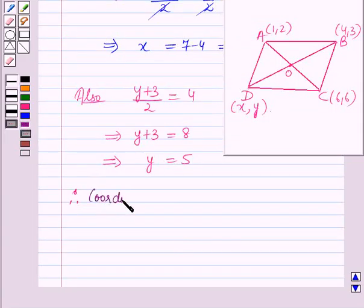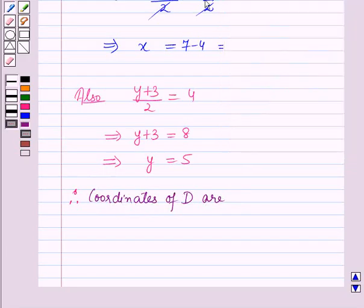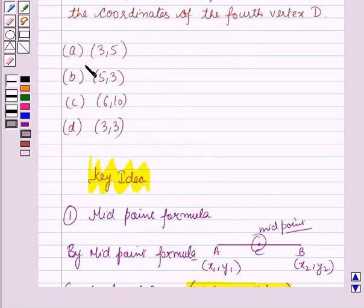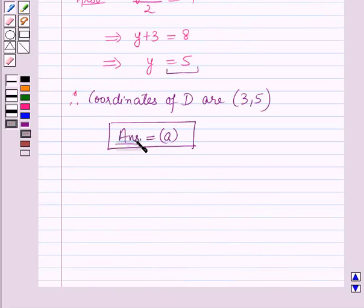Therefore the coordinates of D are (x, y), so putting the values of x and y here, x is 3 and y is 5. So the coordinates of D are (3, 5). So answer of this question is option A. So we have answer is option A which equals (3, 5). So this is the solution of the given question and that's all for this session.